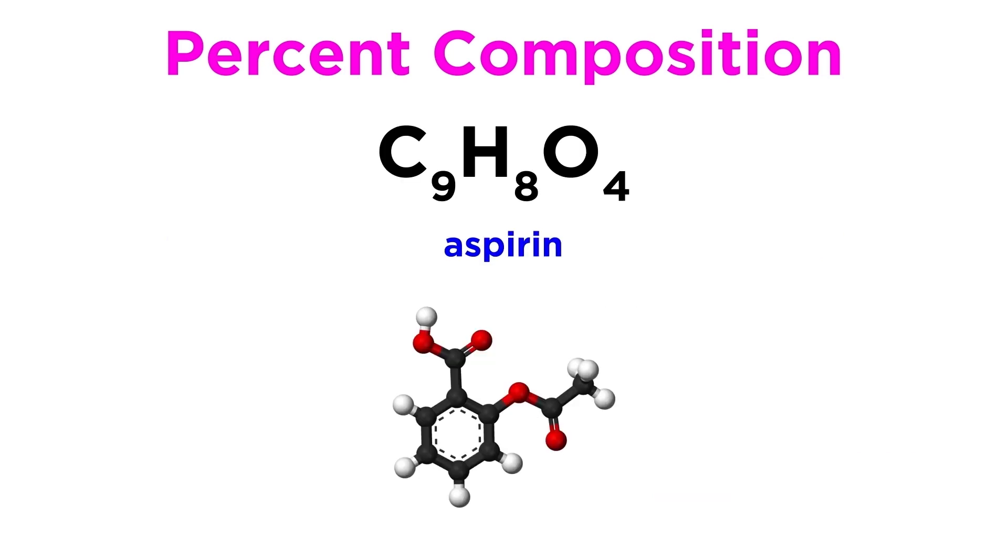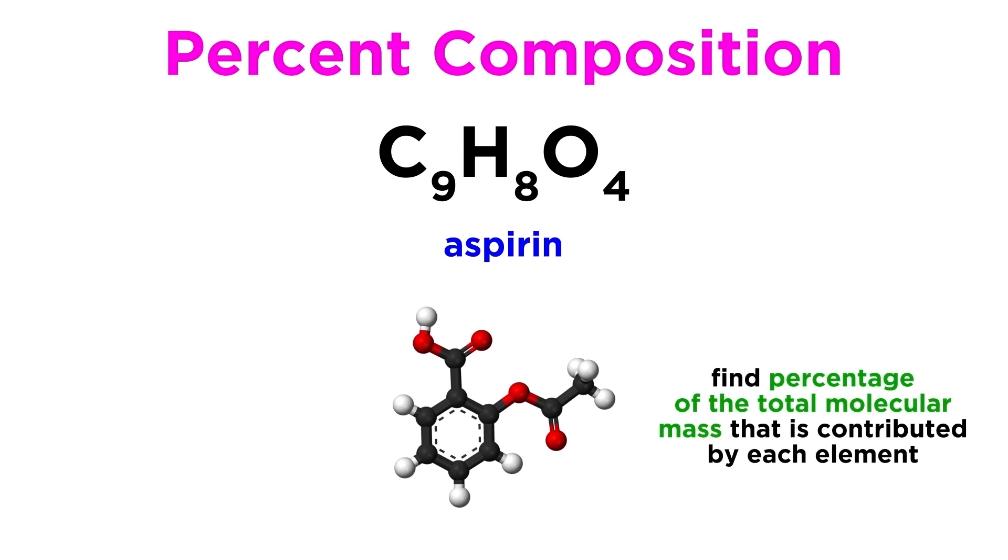Let's try another example. Aspirin has the chemical formula C9H8O4. What is the percent composition of this compound? Once again, to answer this, we just find the percentage of the total molecular mass that each element is contributing.